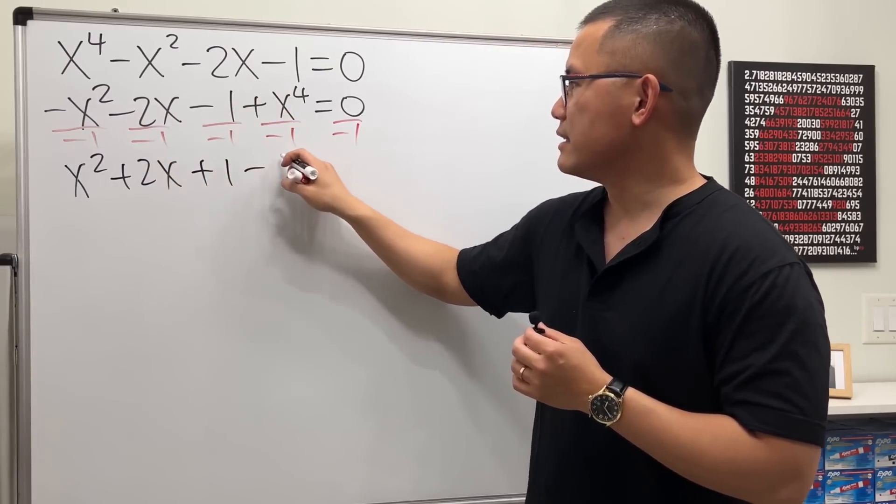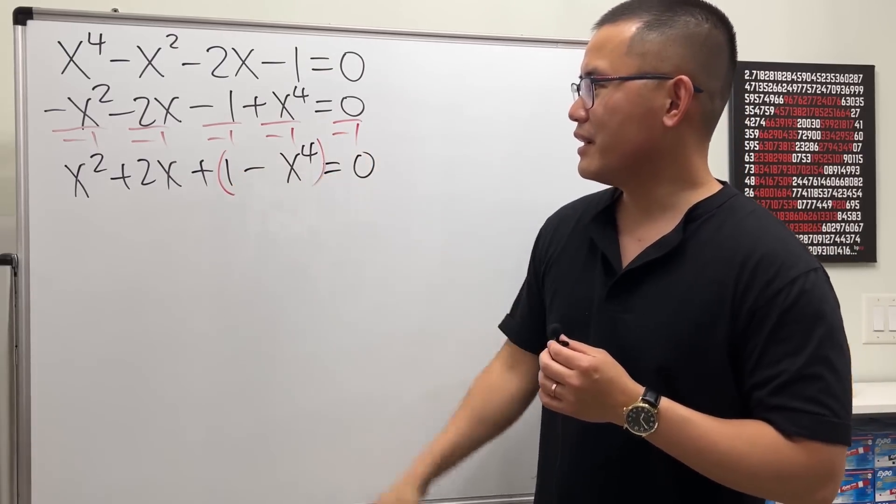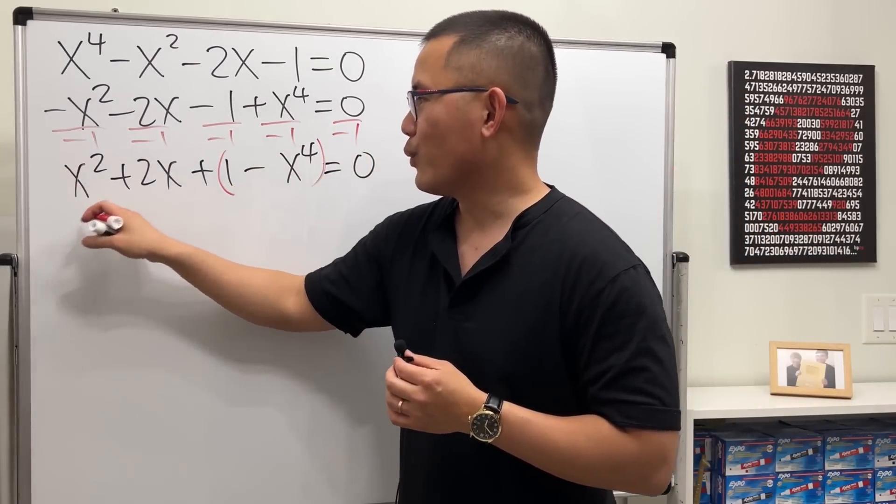So we are looking at x squared plus 2x plus 1 minus x to the fourth power equal to 0. And here you go, this right here is the c, a is equal to 1, b is 2.